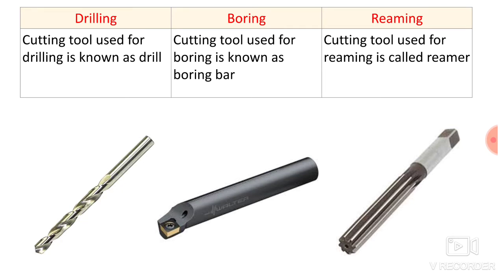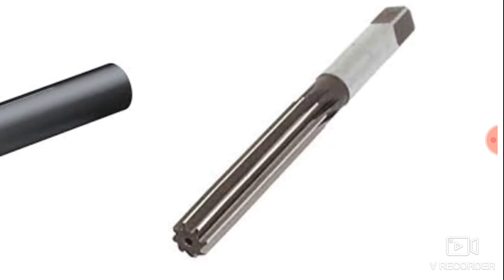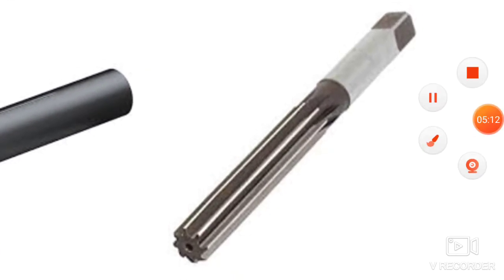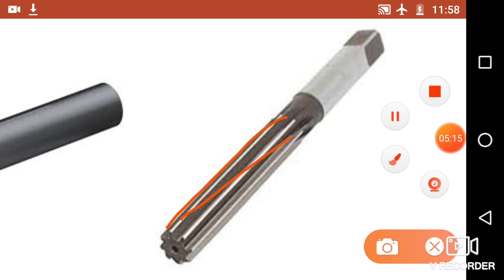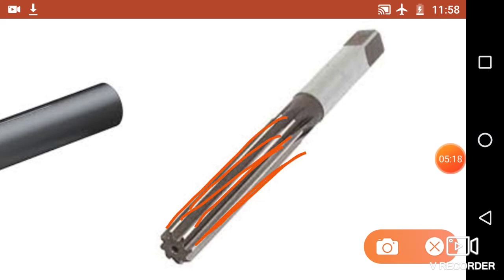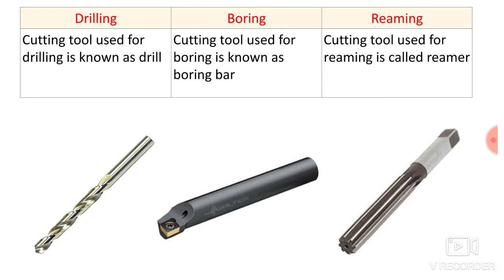The third cutting tool is for reaming — the cutting tool used for reaming is called a reamer. Here you can see the reamer, which has cutting teeth over its periphery. With these sharp edges it can remove material from the circumference of the hole. So the cutting tool used for drilling is a drill bit, the cutting tool for boring is a boring bar, and the cutting tool for reaming is a reamer.